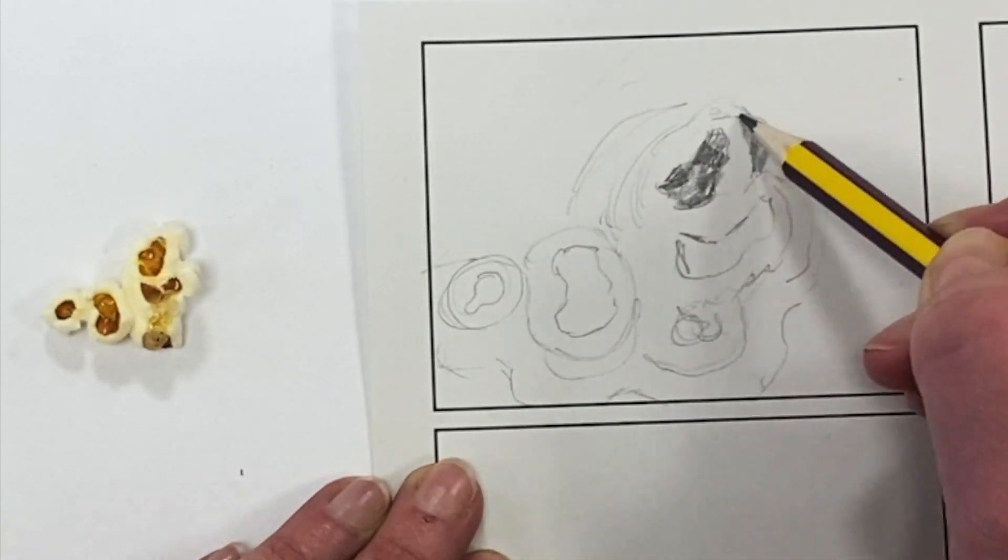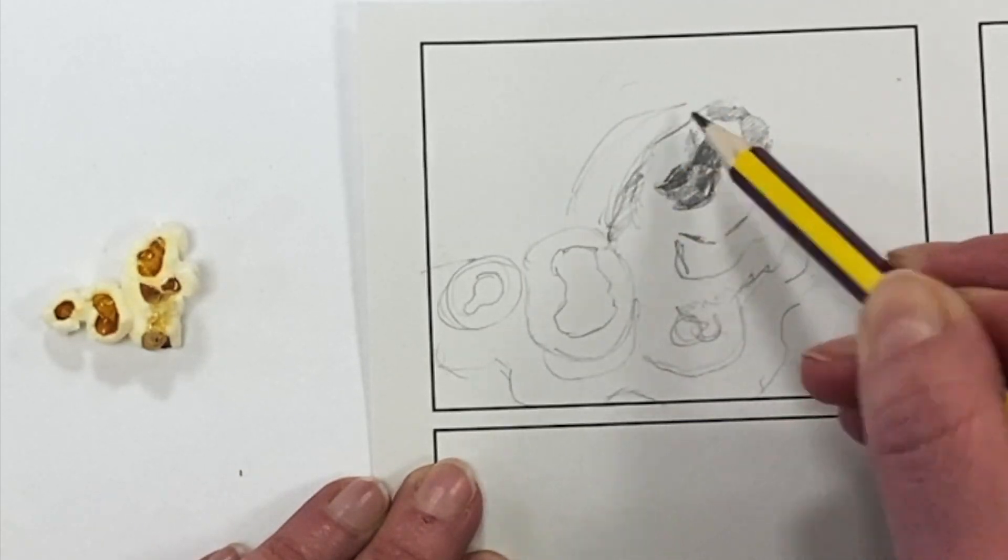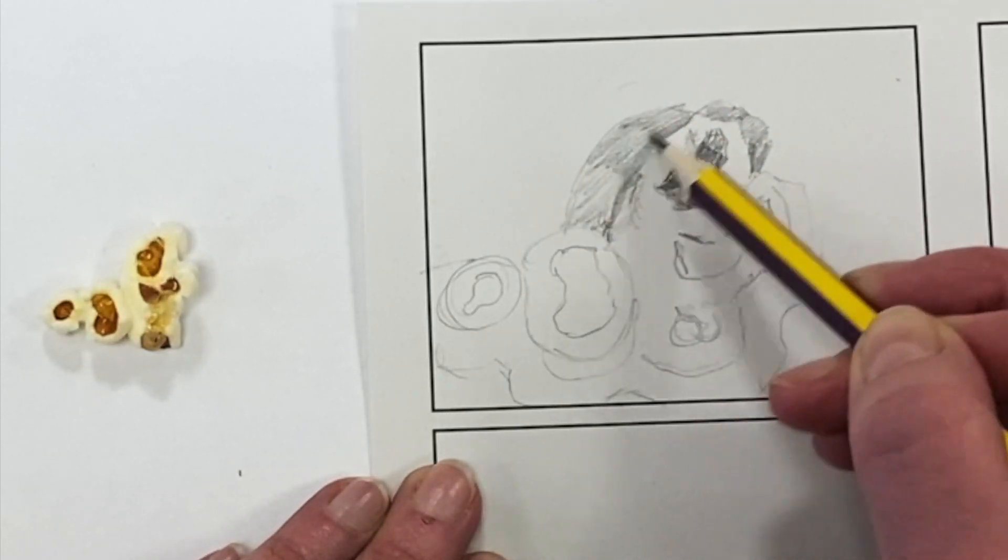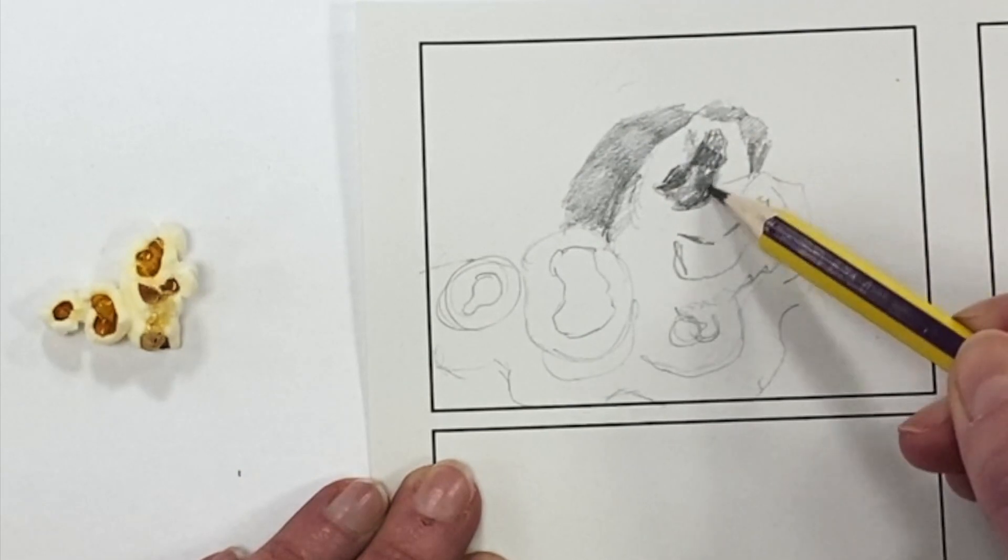As you can see, I've drawn considerably bigger than the piece of popcorn. So I've got a drawing that fills the space on my little square on my worksheet.